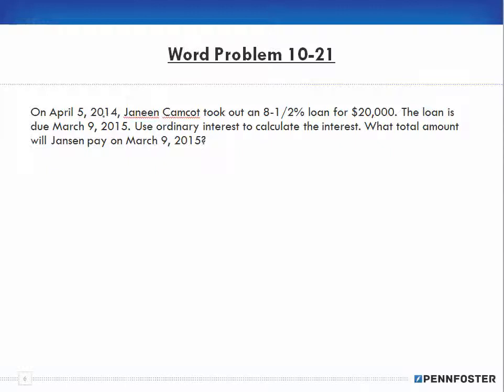On April 5th, 2014, Janine took out an 8.5% loan for $20,000. That's my rate and that's my principal. When it's telling me April 5th, 2014, I know that's going to be my time. The loan is due March 9th of 2015. Pay attention to that - we're talking about April 5th of 2014 and it's due on March 9th, 2015.